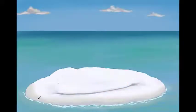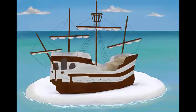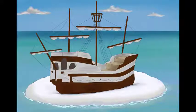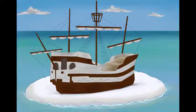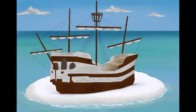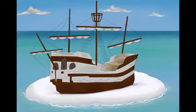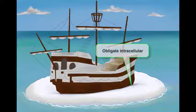Here we have a small island with a pirate ship that is run aground. First let's go over some of the microbial characteristics. It's important to remember that Chlamydia species is an obligate intracellular bacteria. We have the ship running aground, stuck on an island. This round, white, sandy island represents the cell, and the ship is the bacteria that's stuck on the island — so that's obligate intracellular.